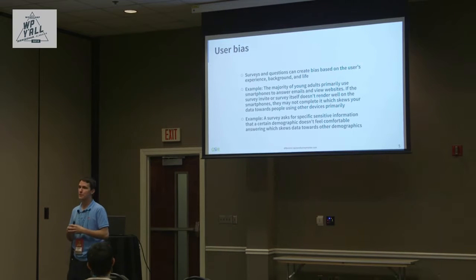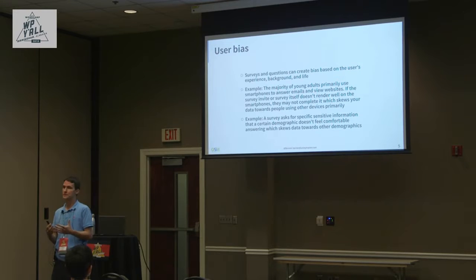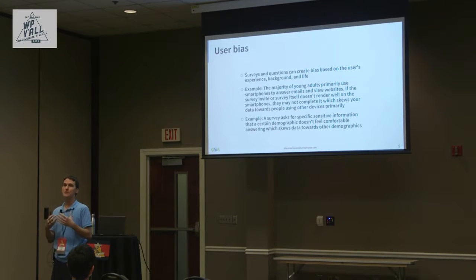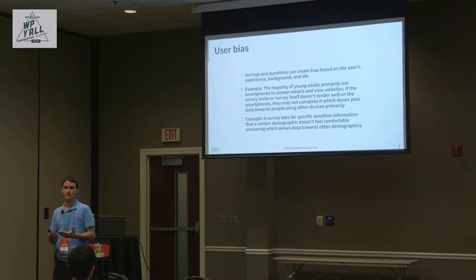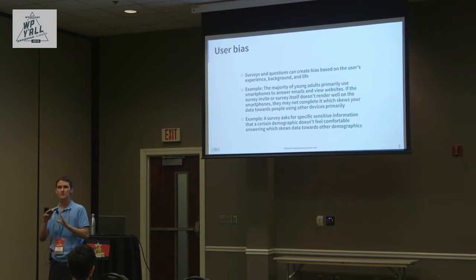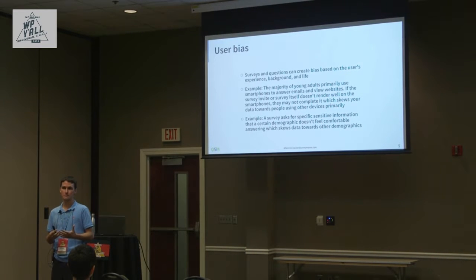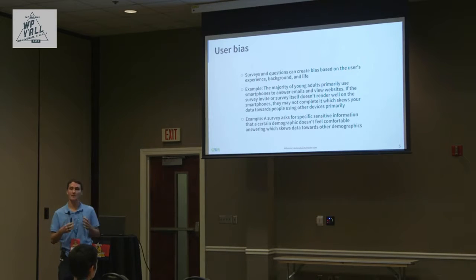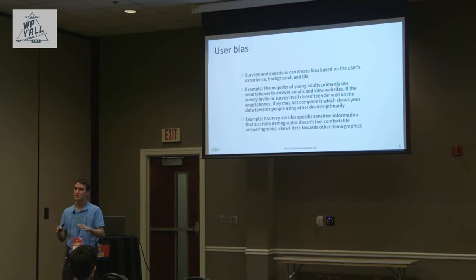This is why the census is so heavily debated — if they include questions about citizenship, they get a lower turnout. To avoid that, they purposely word questions and remove some that would prevent people from answering. That's how user bias can be affected by the user's background and life circumstances, not just the questions themselves.